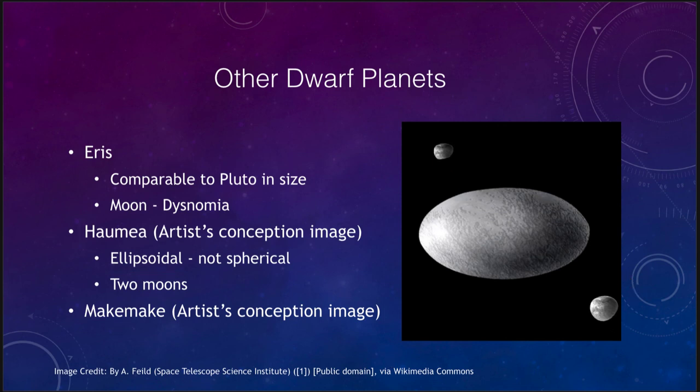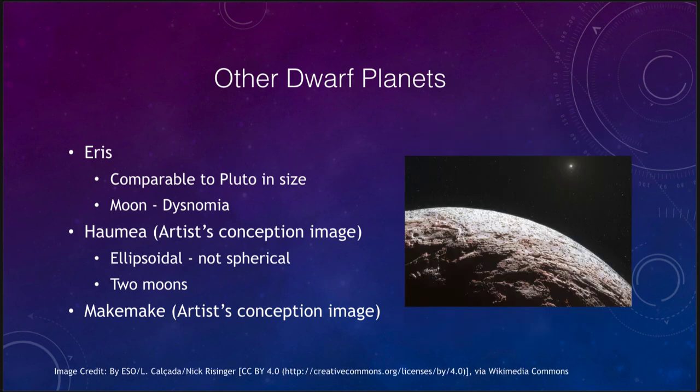And finally there is Makemake, shown here in another artist's conception of what it might look like from just above the surface. It is thought to be similar to Pluto, since that is the only comparable object we have studied up close. We know their orbits and can make some estimates from observations, but we really don't know a whole lot about any of these other objects.